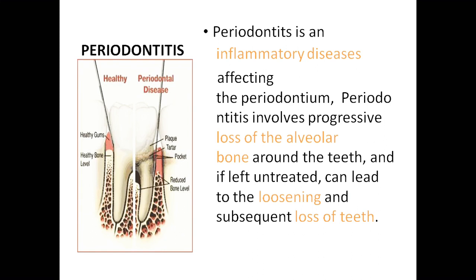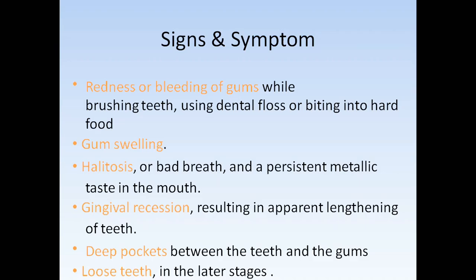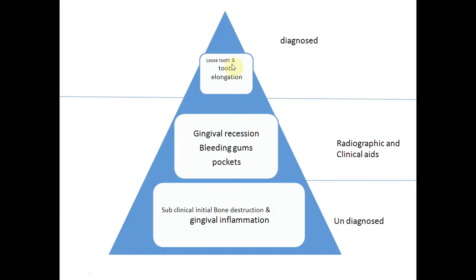Looking at the periodontitis iceberg: the tip shows patients who come with symptoms like loose teeth or tooth elongation where bone support is lost. Our goal is to conduct more radiographs and other clinical aids to find out gingival recession, bleeding gums, and pocket cases at very early stages, giving them a better prognosis before they turn up at the tip. We need to pick up patients underwater and give treatment so they don't progress to the severe stage. Active screening is needed to find people without symptoms.